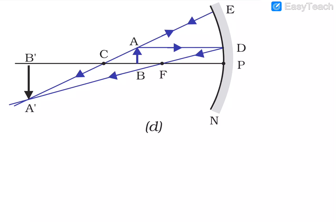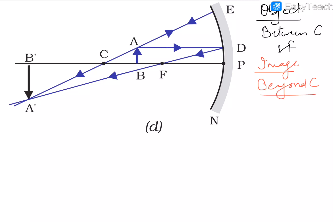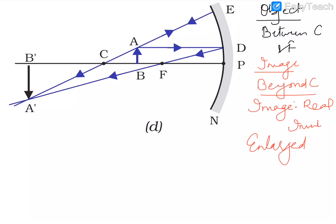The fourth case: the object is between C and F. Applying the rules — a ray parallel to the principal axis passes from the focus, and a ray passing from the center of curvature reflects back. Where both rays meet, the image is formed beyond C. The image is real, inverted, and enlarged — you can see that A'B' (image size) is larger than AB (object size).